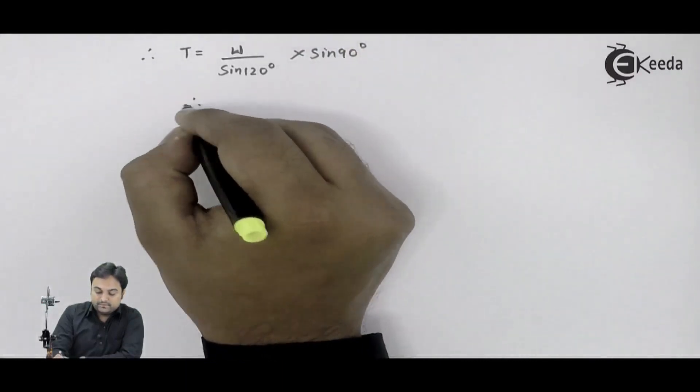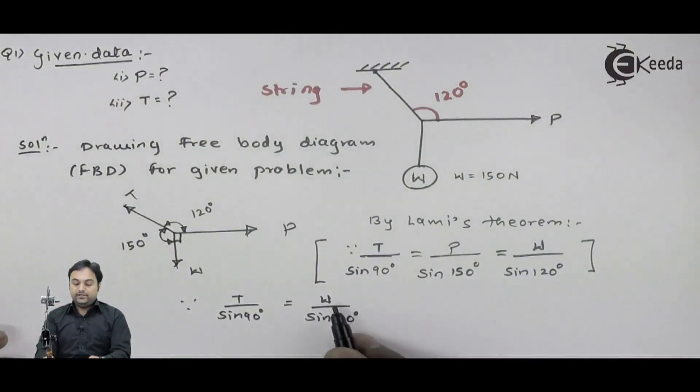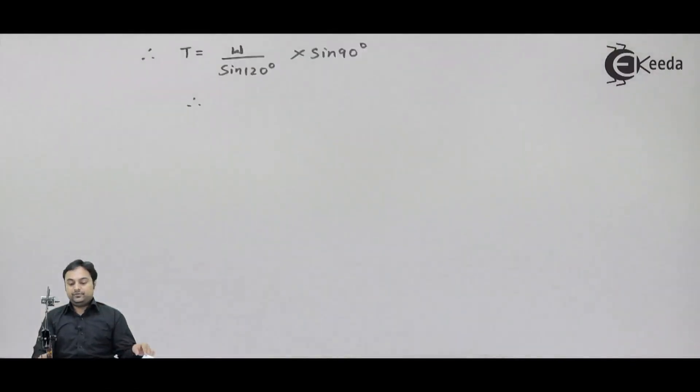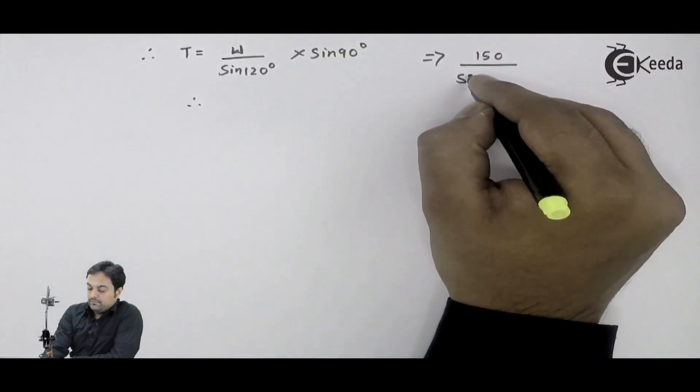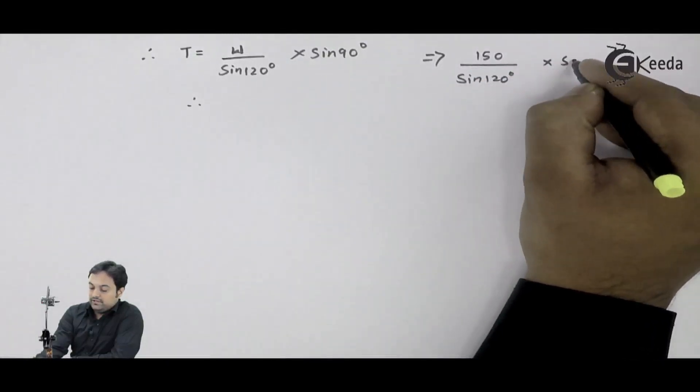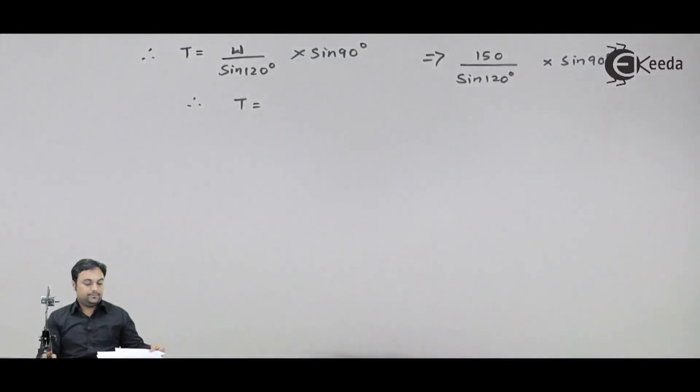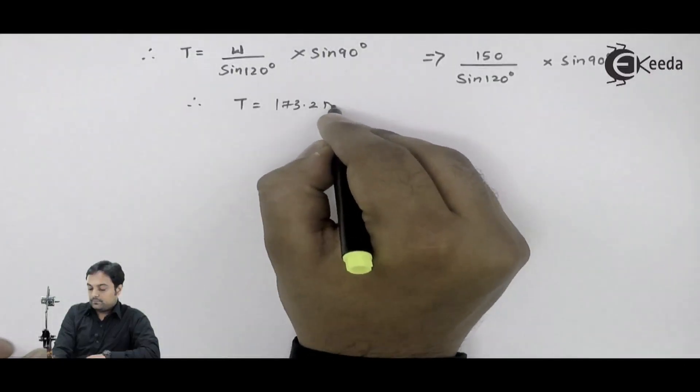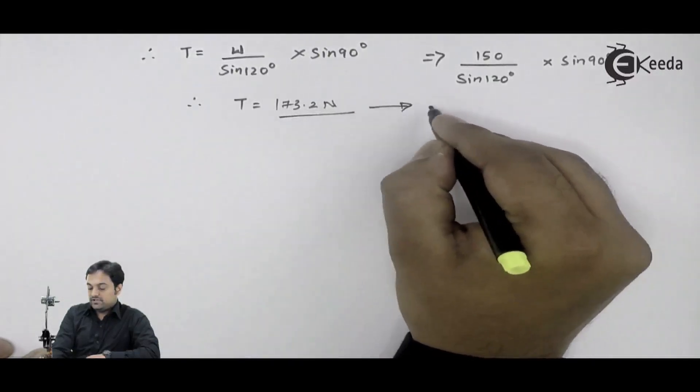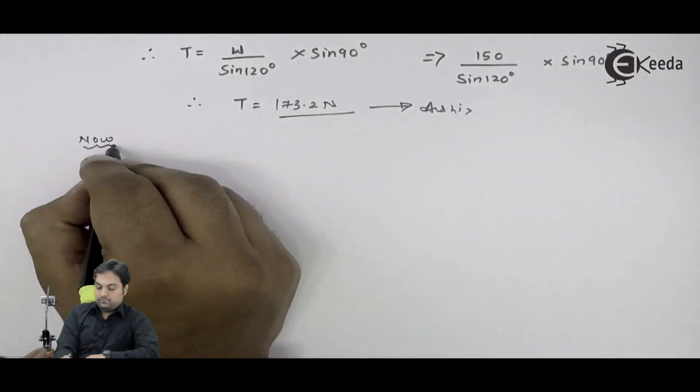First I will be writing T sine 90 is equal to W sine 120. I want to calculate T here so I'll keep T on one side. Therefore T is equal to W upon sine 120 multiplied by sine 90. W value is 150 Newton so this will be 150 upon sine 120 into sine 90. So if I calculate this I will get my answer of T which I am getting it as 173.2 Newton, my first answer.